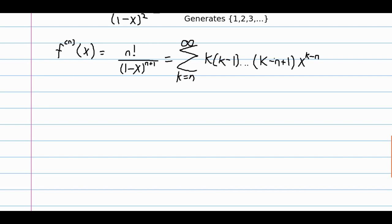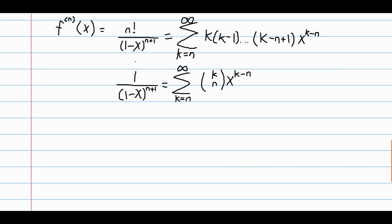We can notice that this product, since we're starting at n, is actually the n consecutive integers starting at k. In my video on combinations, I proved that this product divided by n factorial is actually equal to k choose n. Putting that together, we have that 1 divided by 1 minus x to the n plus 1 is equal to the sum as k goes from n to infinity of k choose n times x to the k minus n. So what we have here is a way to generate a diagonal of Pascal's triangle.